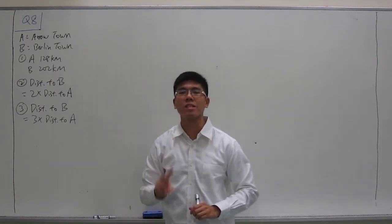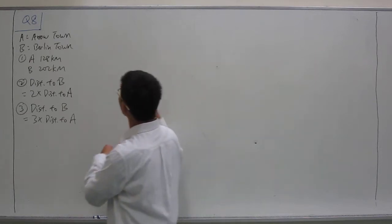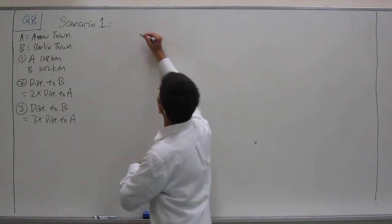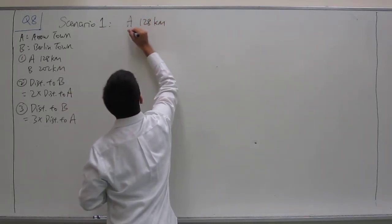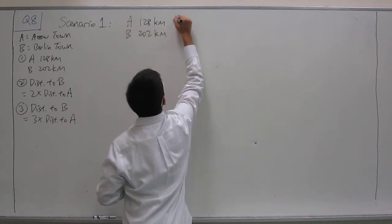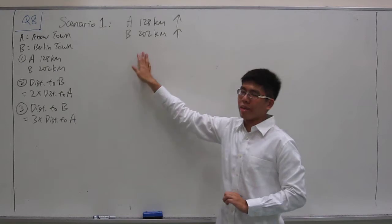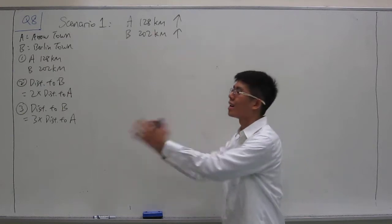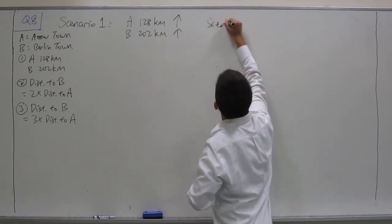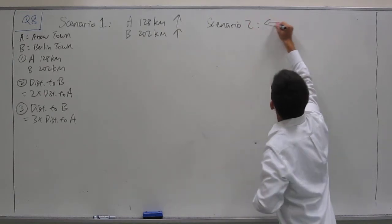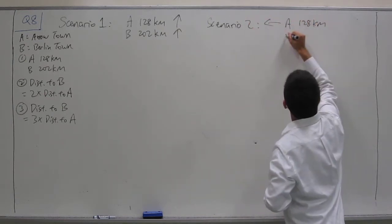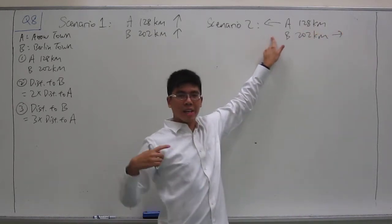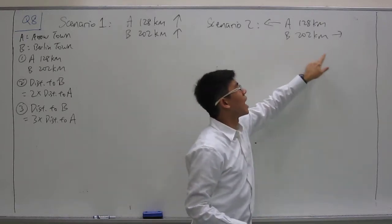With these conditions, there are actually two possible scenarios. Scenario 1 is that A and B are both ahead of Kelvin, indicated by arrows pointing outwards. Scenario 2 is when AeroTown is in front of Kelvin but Berlin Town is behind Kelvin.